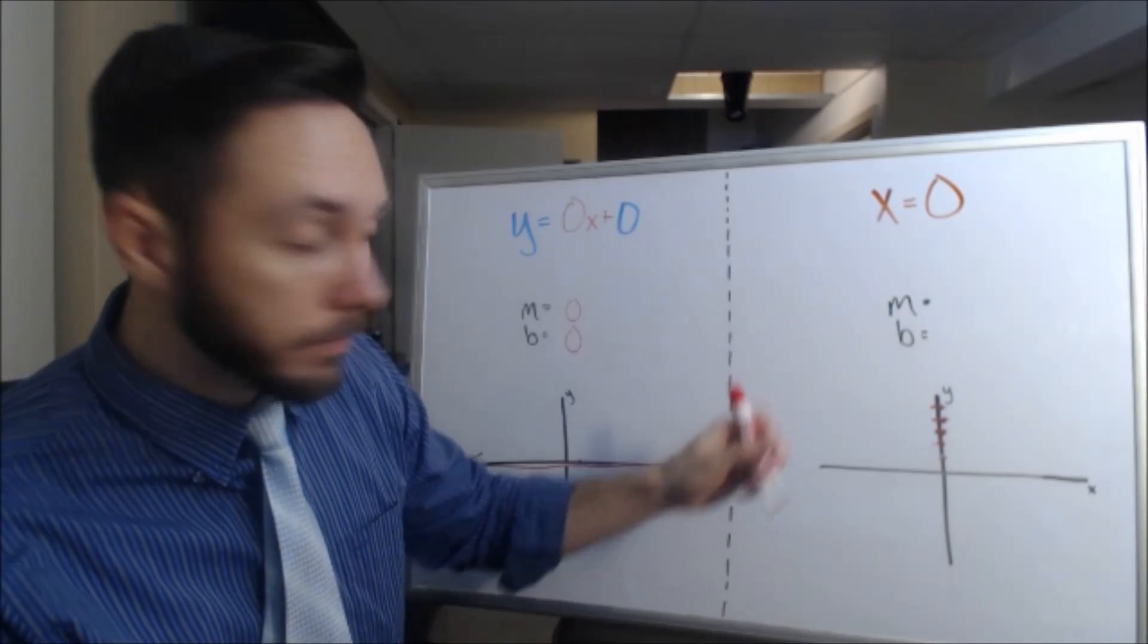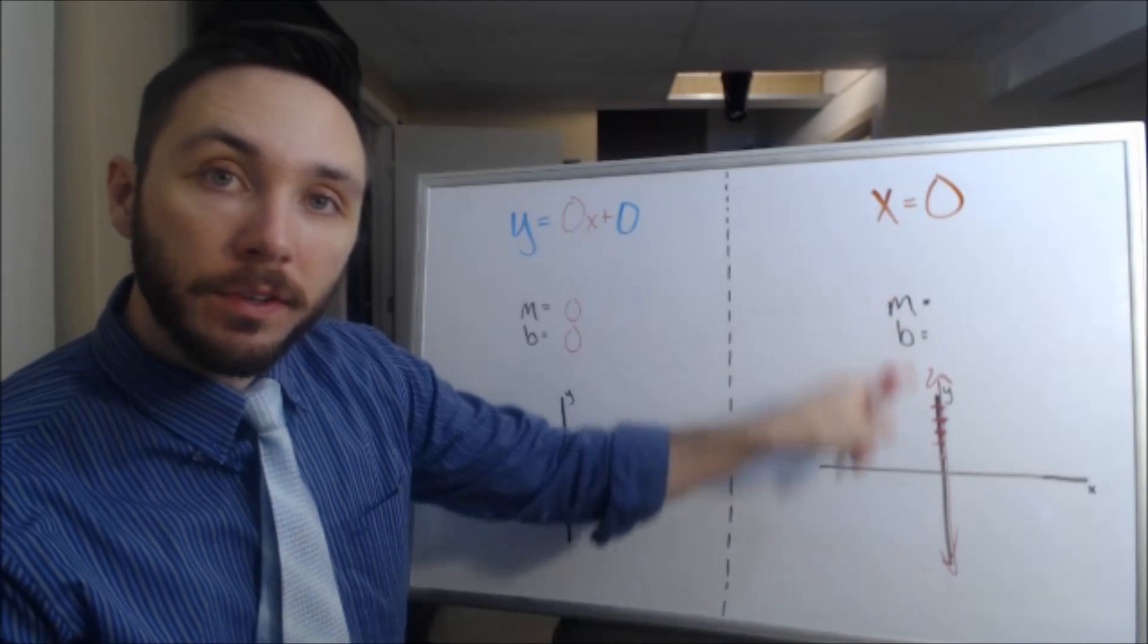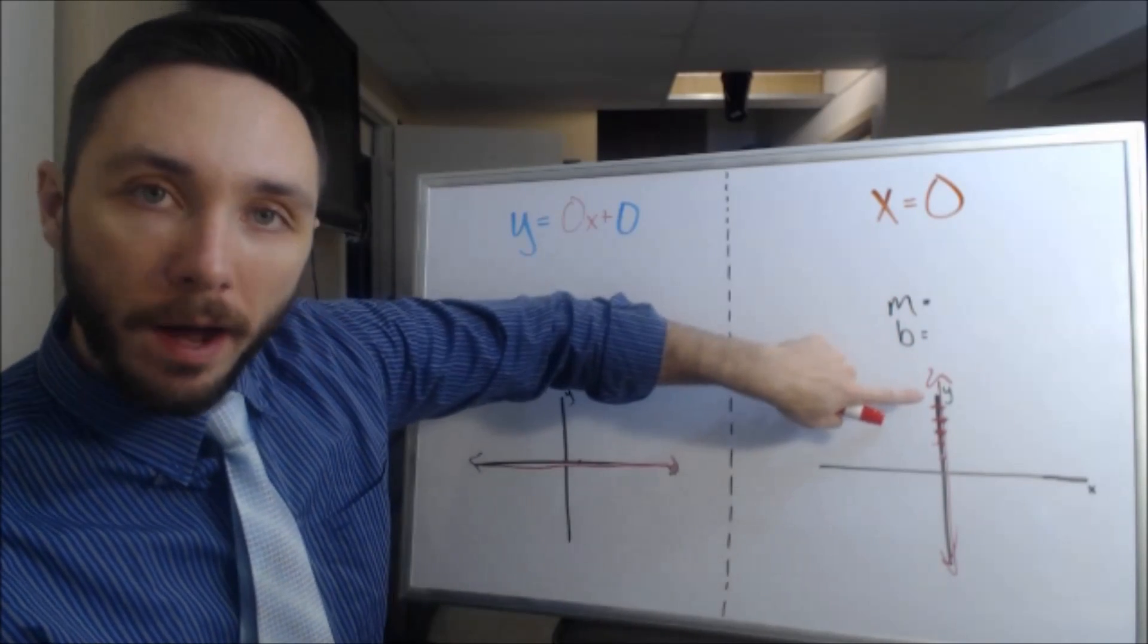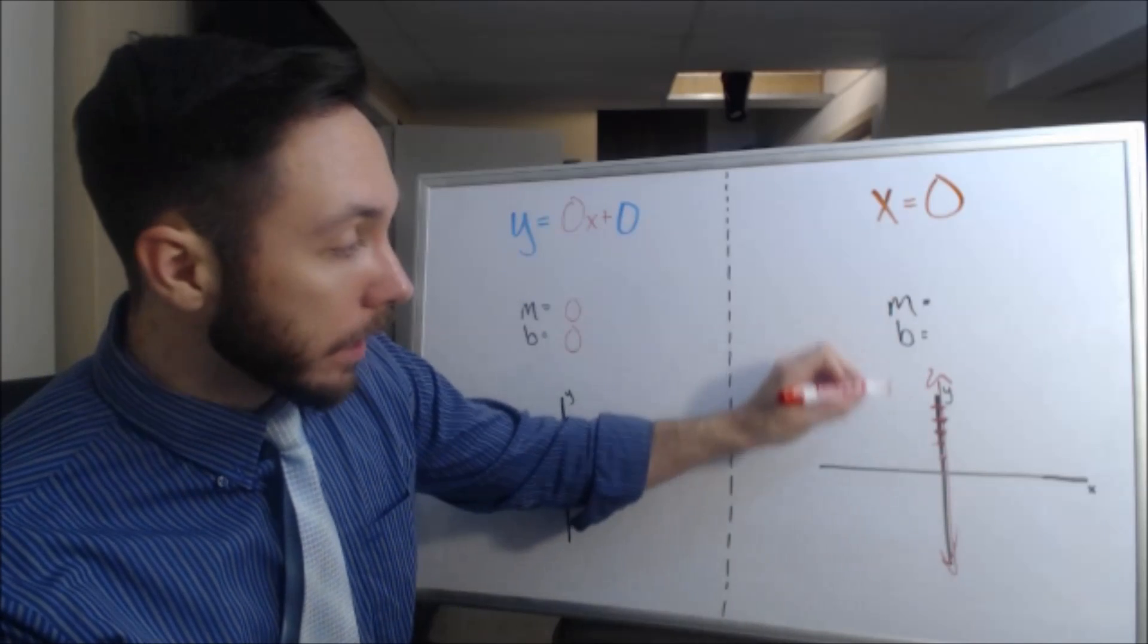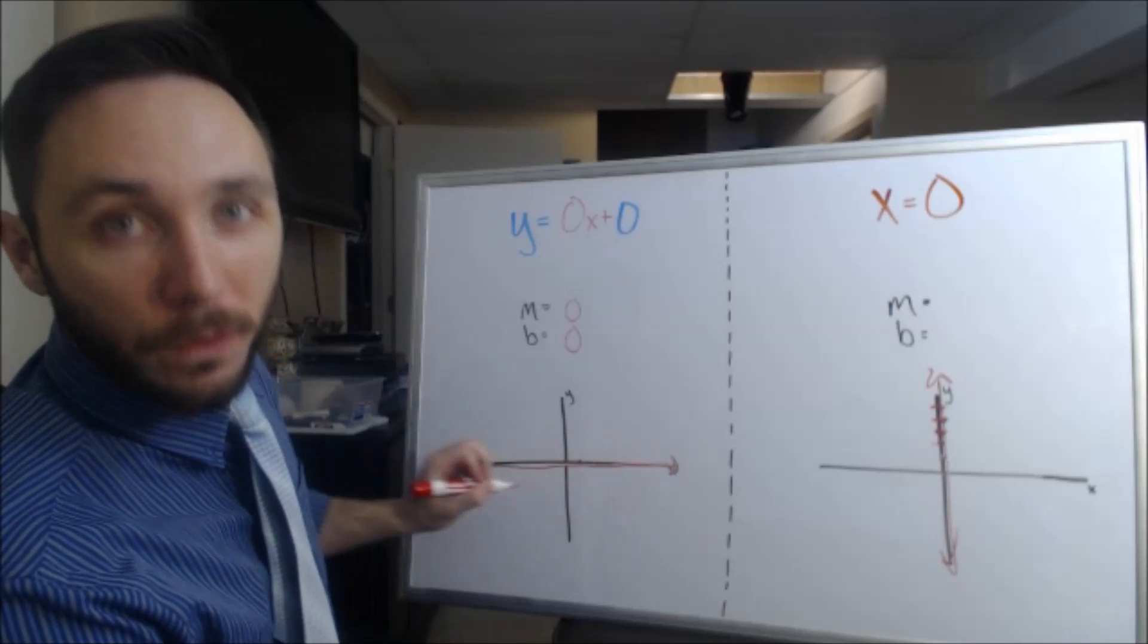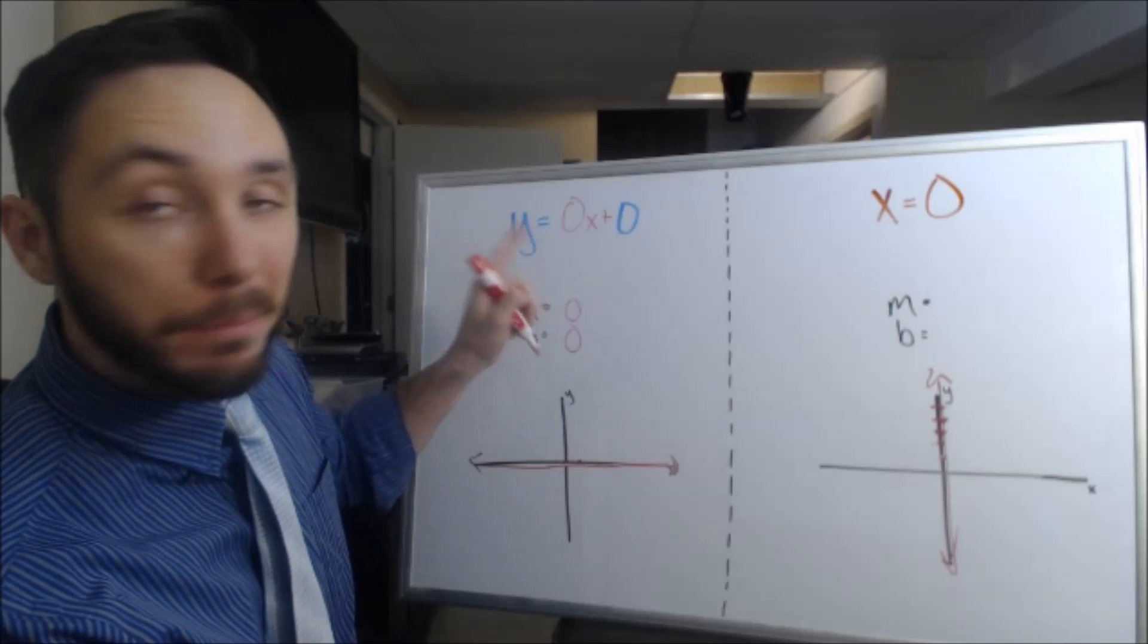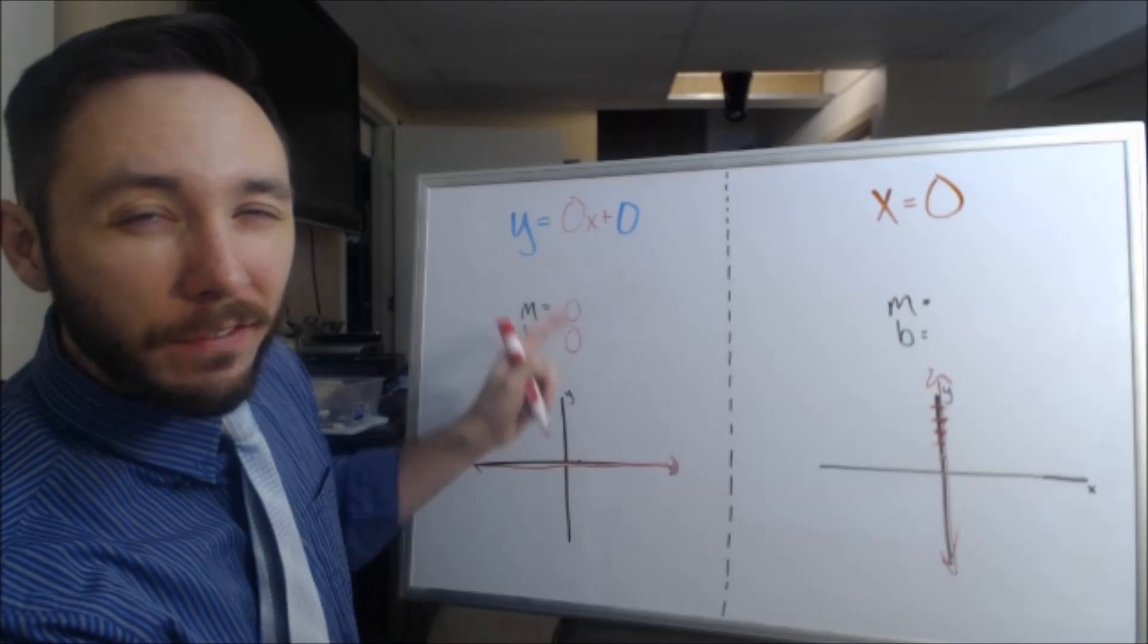We actually get this perfectly vertical line now on the y-axis. Here on this vertical line, every single ordered pair that exists on the line has an x component of 0. Here on this horizontal line, every single ordered pair that exists on this has a y component of 0. Do you see the difference between the two?